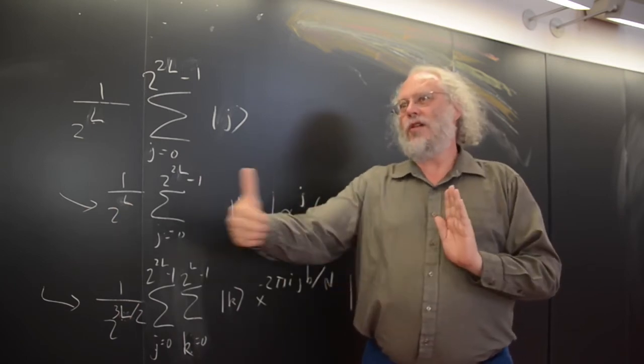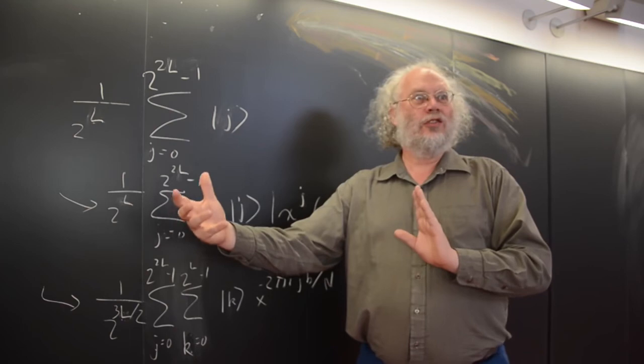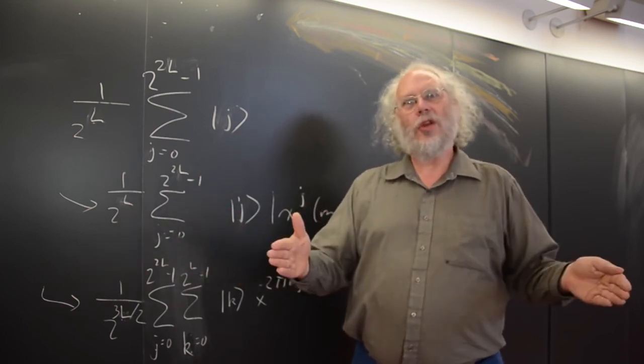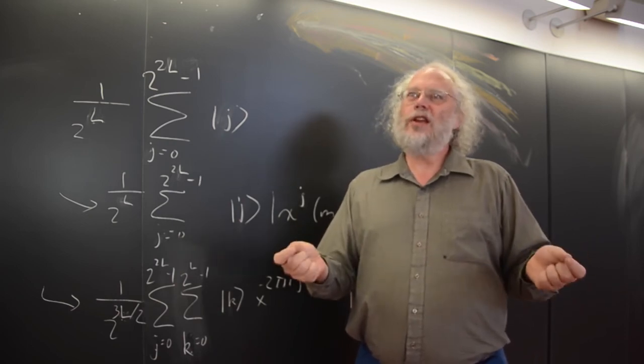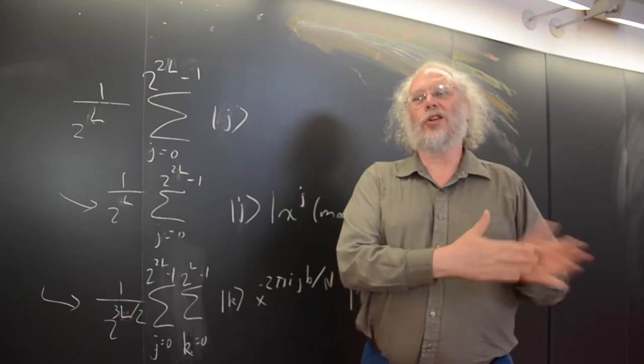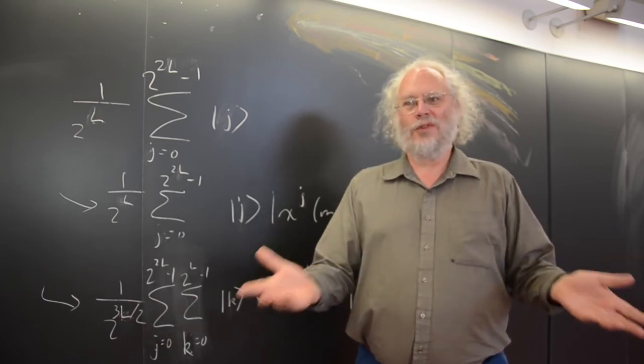So we have a periodic pattern, and we put the information through a computational interferometer, which gives you the period. And once you have the period, you can use number theory on a classical computer to factor the number.